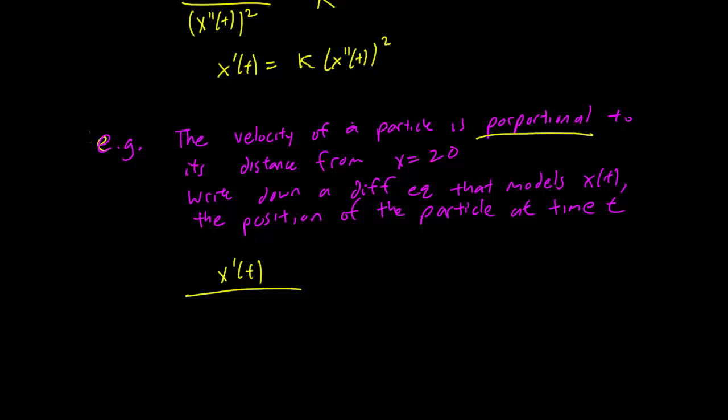This is the distance of the particle from the point 20, and this is equal to a constant k. Or equivalently, we can also write it down this way. And this is how we translate a physical problem into the language of differential equations.